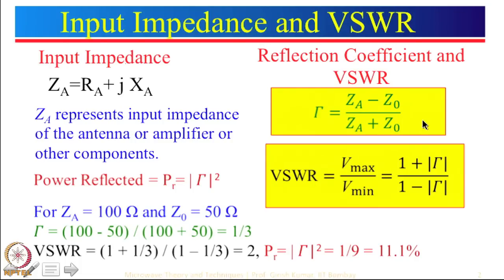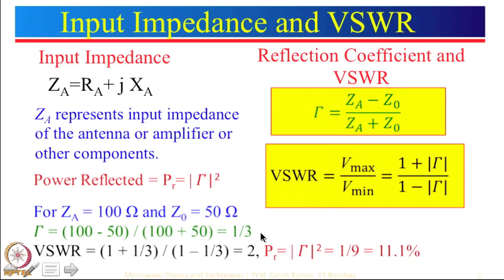Let us take a simple case where Za is a real value, that means Xa is equal to 0. If Za is equal to 100 ohm and the characteristic impedance of the line is 50 ohm, then from this equation we can calculate the reflection coefficient, which will be 100 minus 50 divided by 100 plus 50. That is 50 divided by 150, which is equal to 1 by 3.